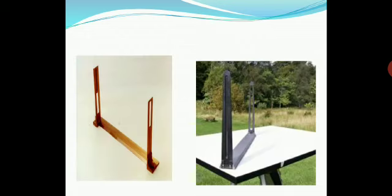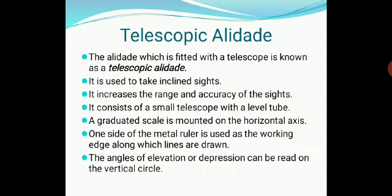This image shows the alidade — one in use directly on the field, and another as a diagram. The other type is called the telescopic alidade. The difference is that it can take inclined sights, meaning we can incline this alidade, and it can increase the range and accuracy of the sight.